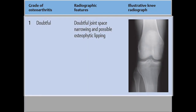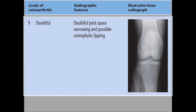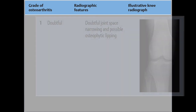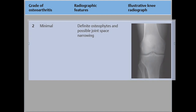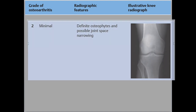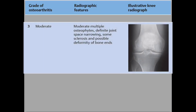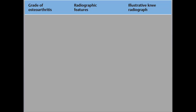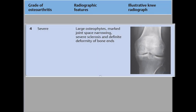Grades of osteoarthritis: Grade 0 — no joint space narrowing or reactive changes. Grade 1 — possible osteophytic lipping plus doubtful joint space narrowing. Grade 2 — definite osteophytes plus possible joint space narrowing. Grade 3 — moderate osteophytes, definite joint space narrowing, some sclerosis, and possible bony deformity. Grade 4 — large osteophytes, marked joint space narrowing, severe sclerosis, and definite bony deformity.